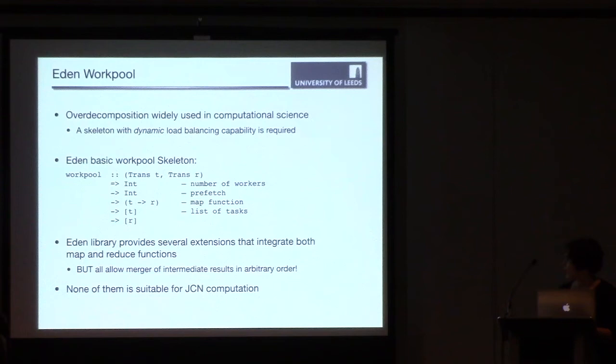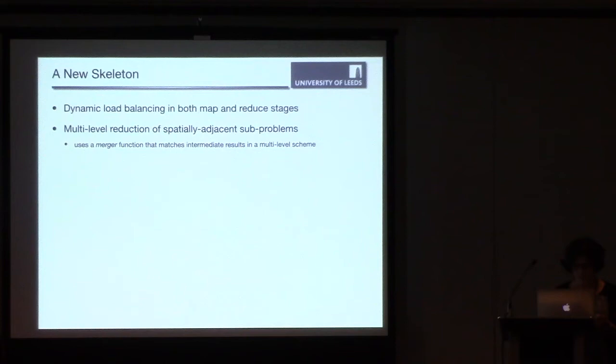But we also need, our process consists of a merge phase. Eden also extends the simple work pool skeleton to integrate both map and reduce functions. But for all these extensions, they assume that the merge function can merge the intermediate results in any arbitrary order. For JCN, if we merge two JCNs that are related to sub-problems that are not spatially adjacent, we get two disjoint graphs. So it's like we have done a redundant computation that doesn't give us any information. It's just wasting CPU cycles or communication network.